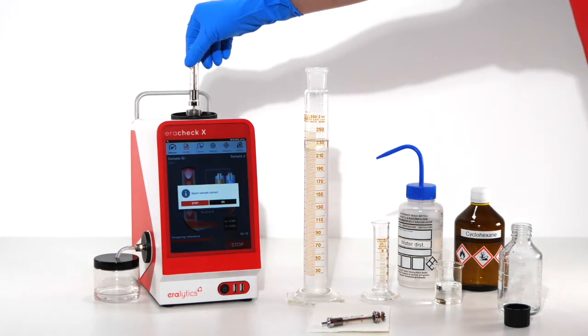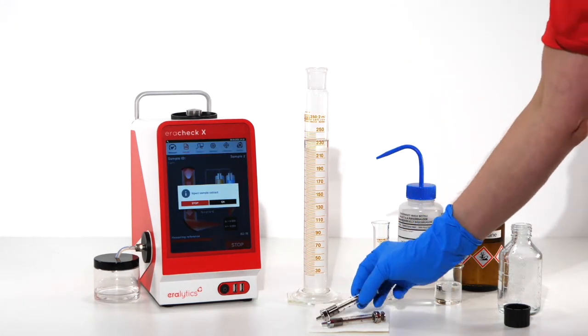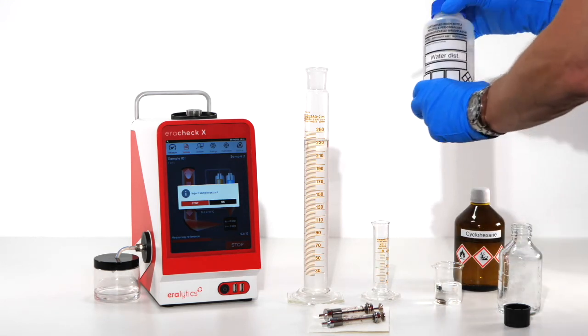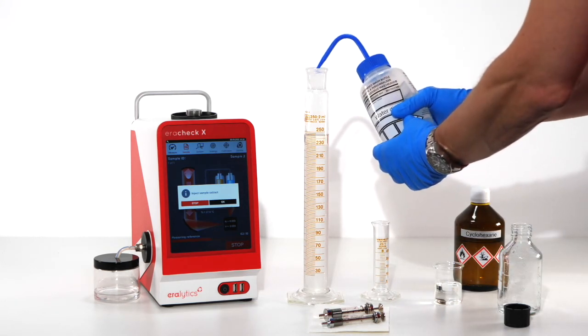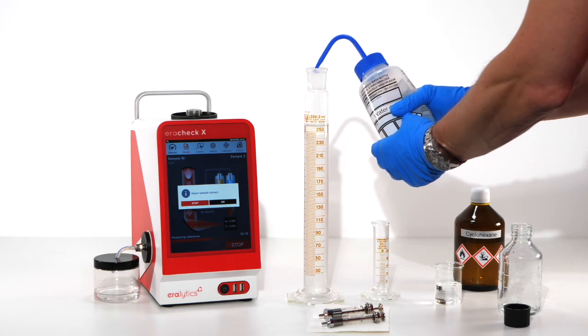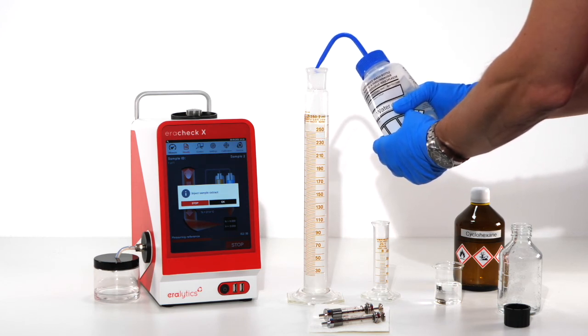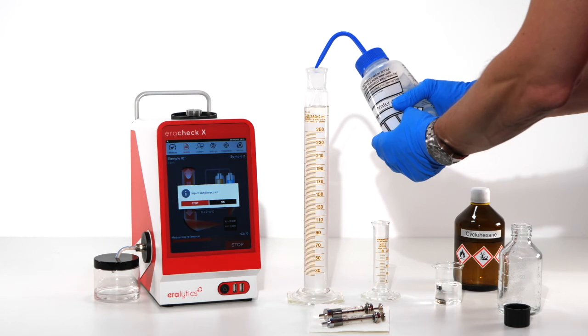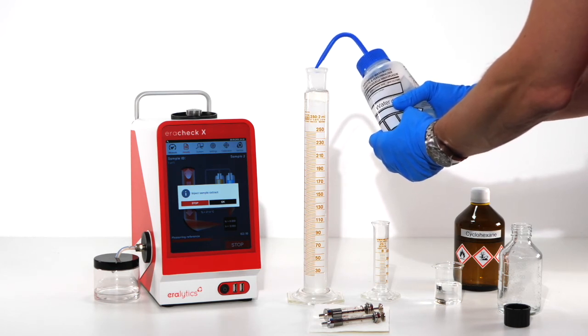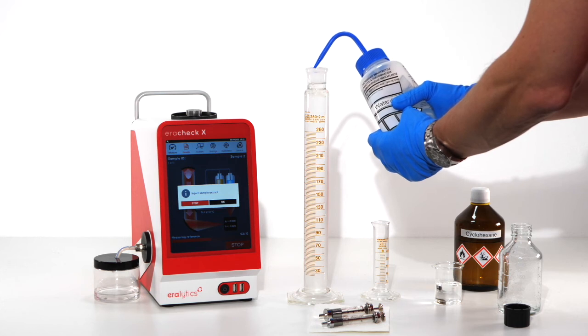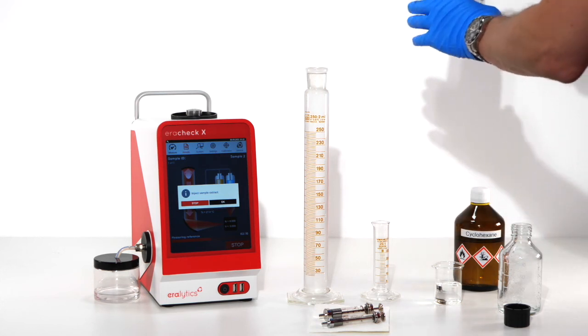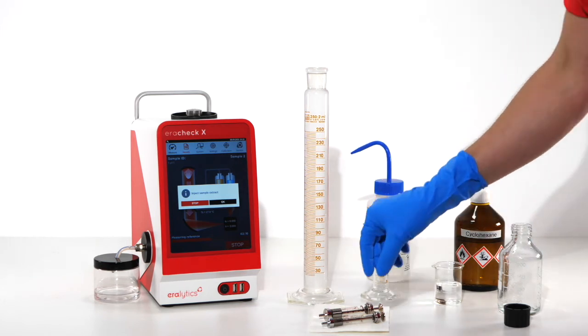Add distilled water until the cyclohexane phase can be conveniently reached with the sample syringe. Extract 3 ml.